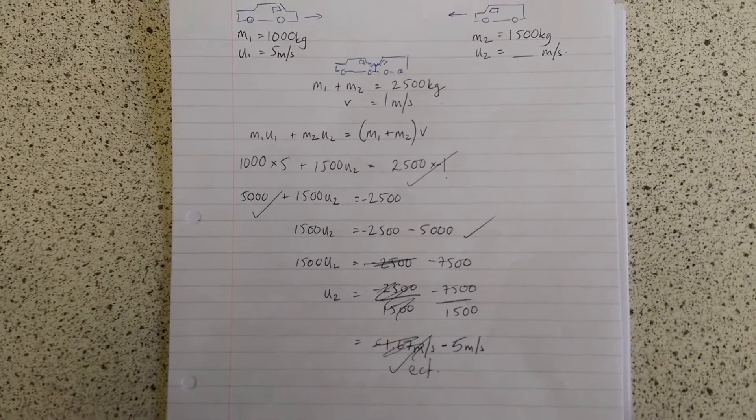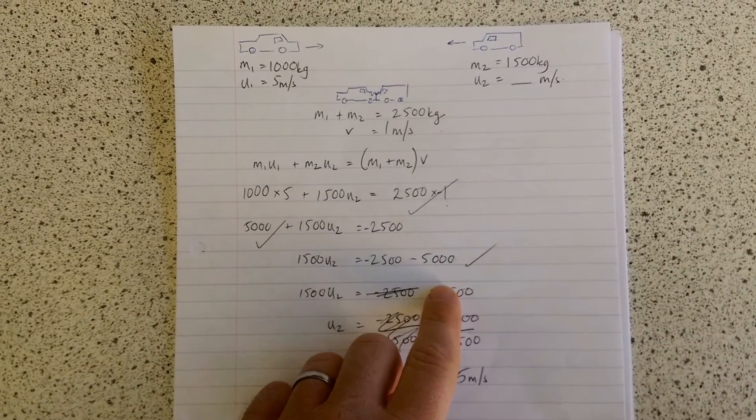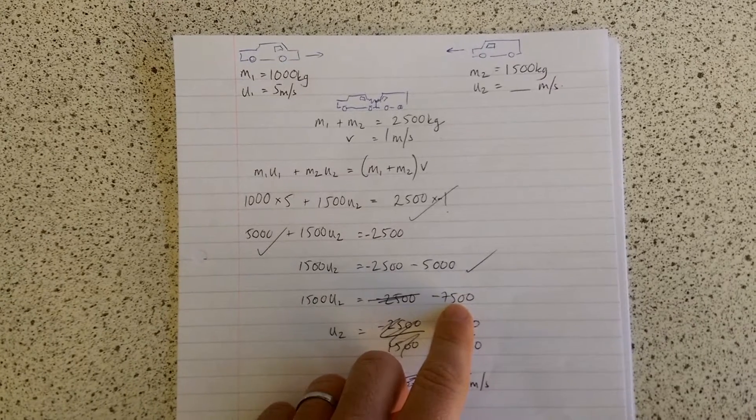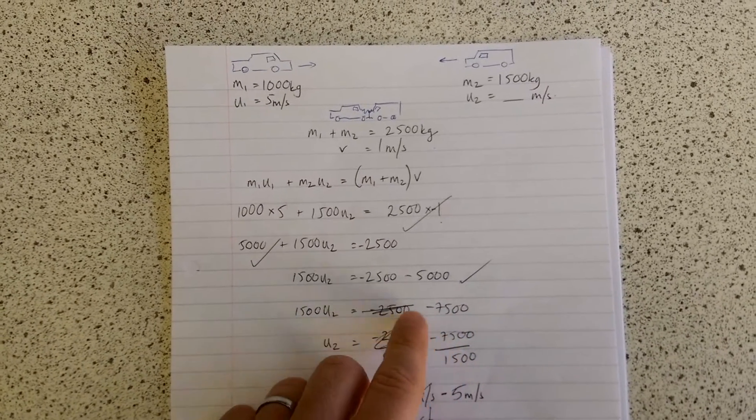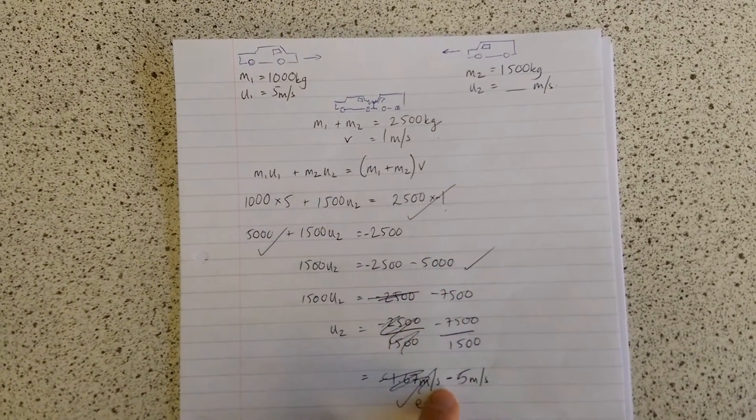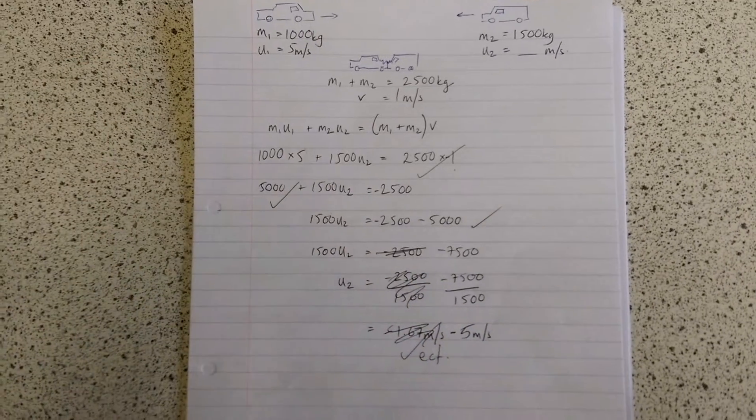So then when I rearranged, if you come down to this step here which is when it actually starts to make a difference, I actually end up with minus 7500 on this side rather than minus 2500. And that means I end up with minus 5 meters per second rather than 1.67.